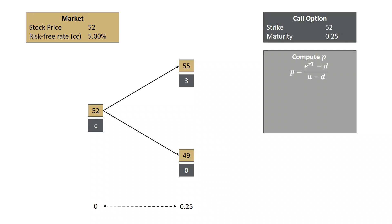When we look at the risk-neutral probability, we have the stock going from 52 up to 55. So 55 represents S times U, or U is 55 over 52, or 1.0577. D is 49 over 52, or 0.9423.